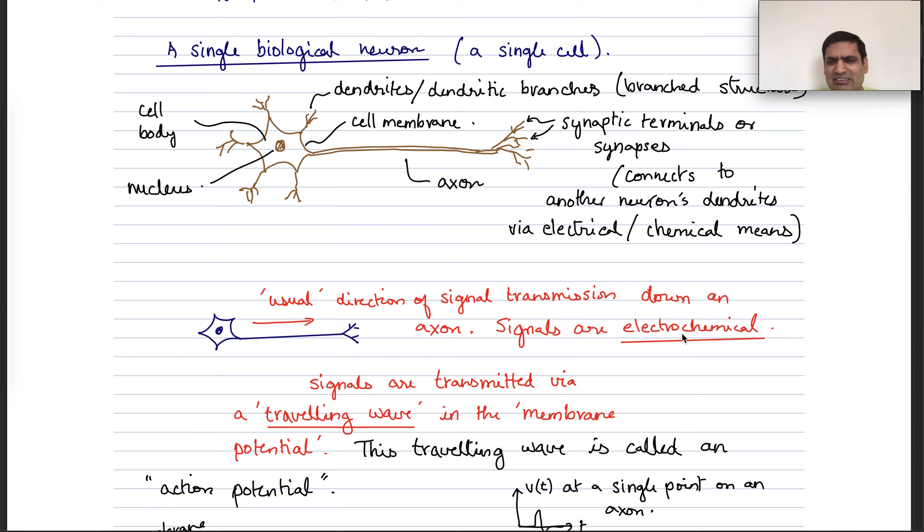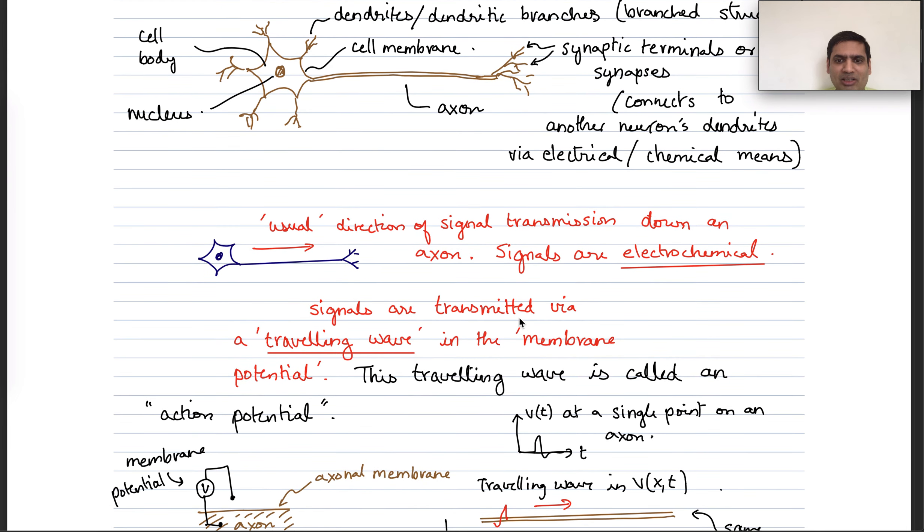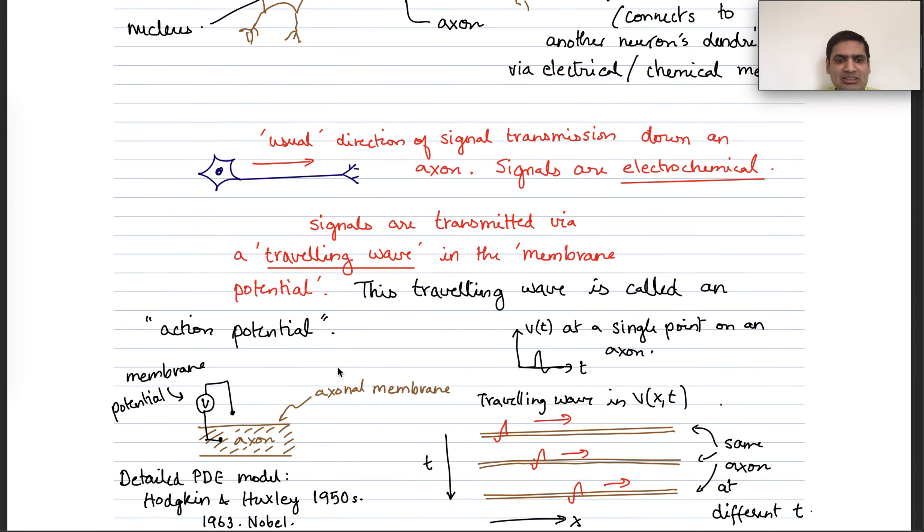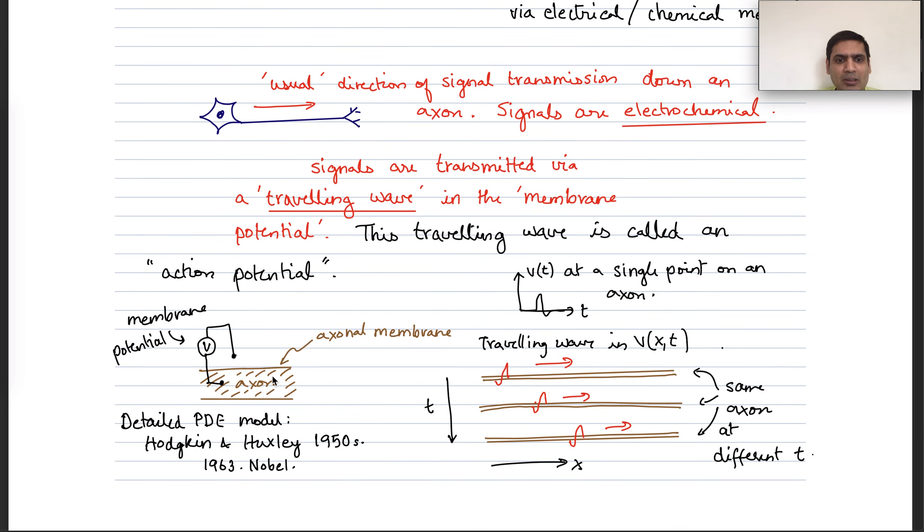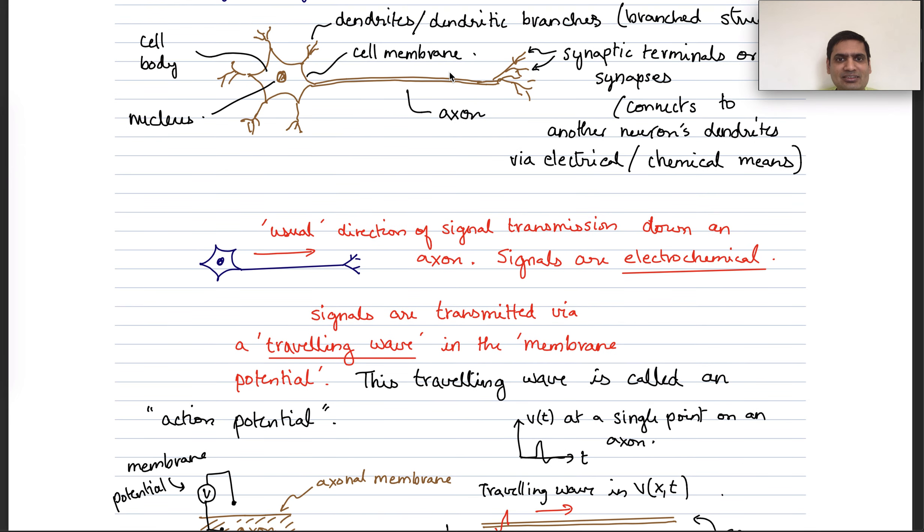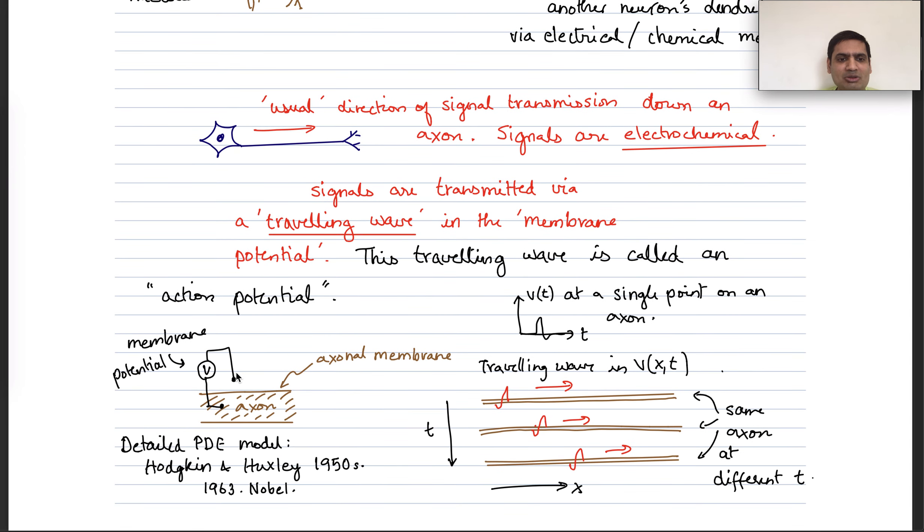So signals are electrochemical. In other words, it's chemical in that these are ions, sodium and potassium ions. And it's electrochemical because the voltage potential across the membrane is important. The signals are transmitted by a traveling wave in the membrane potential. So if you take the axon and stick an electrode inside and outside and measure the voltage across the membrane, that voltage is non-zero.